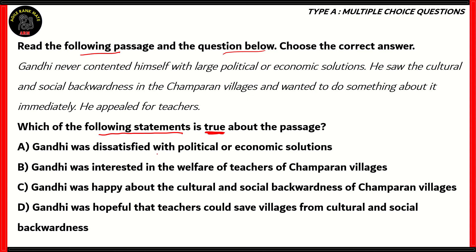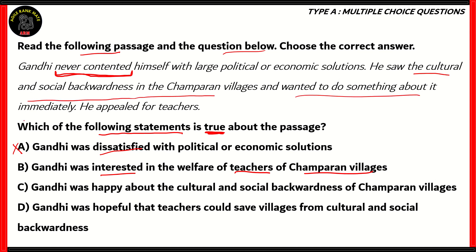The first statement says Gandhi was dissatisfied with political or economic solutions. In the extract, the phrase is 'never contented' — this is not directly referring to dissatisfied. Gandhi did use large political and economic solutions; however, he was more concerned about social and cultural backwardness. So option A is not a true statement. Option B says Gandhi was interested in the welfare of teachers of Champaran villages. He appealed for teachers because there were no teachers there, so statement B is incorrect. Option C says Gandhi was happy about the cultural and social backwardness of Champaran villages — as you can read, he wasn't happy about it, so option C is also incorrect.